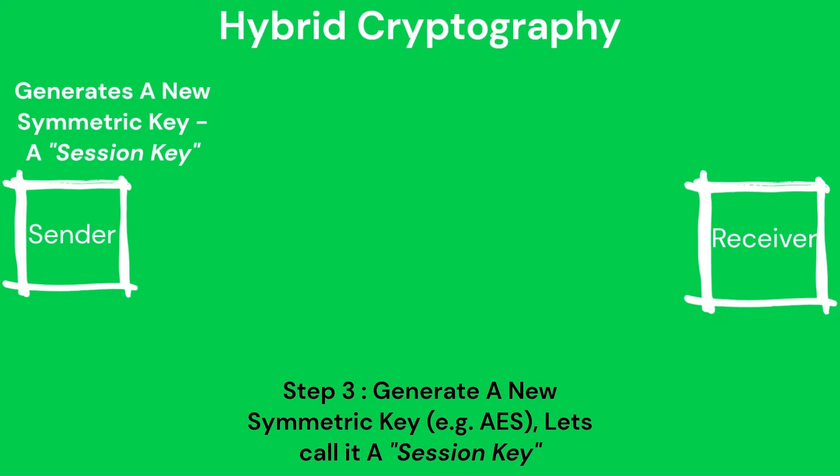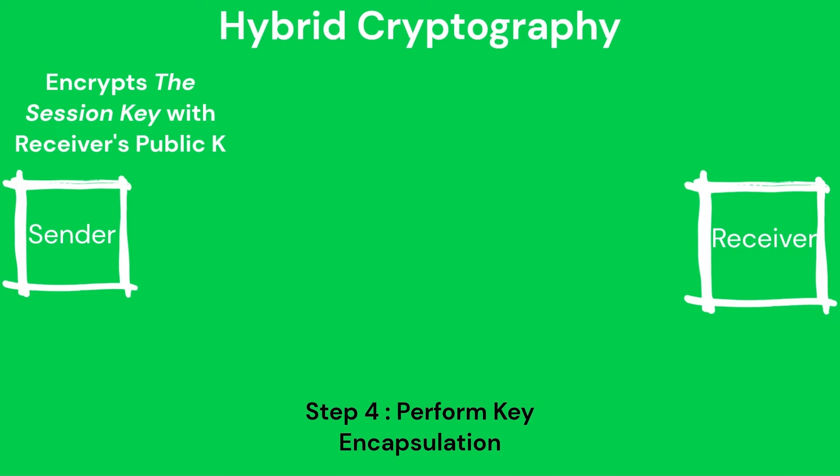In step 3, the sender generates a new symmetric key — let's call this the session key. In step 4, key encapsulation: the sender uses the receiver's public key to encapsulate or encrypt a symmetric key, often referred to as a session key. This encapsulated key is specific to the communication session and will be used for encrypting and decrypting the actual message or data.